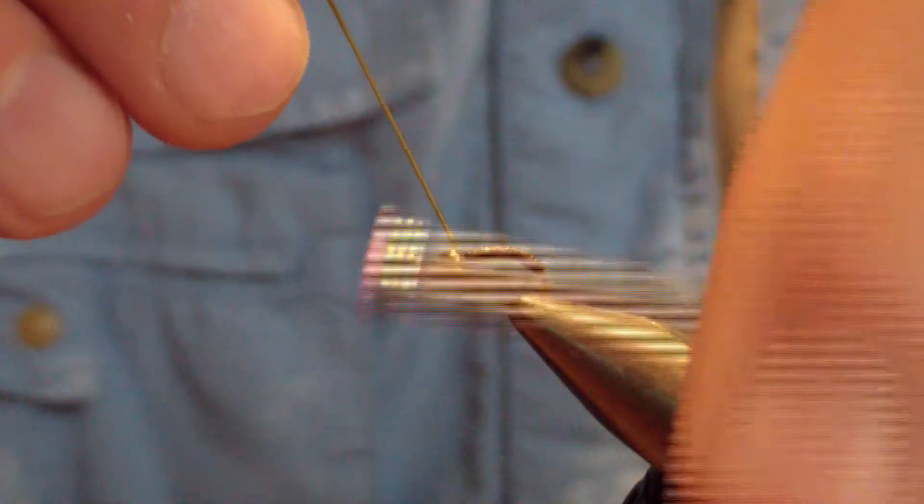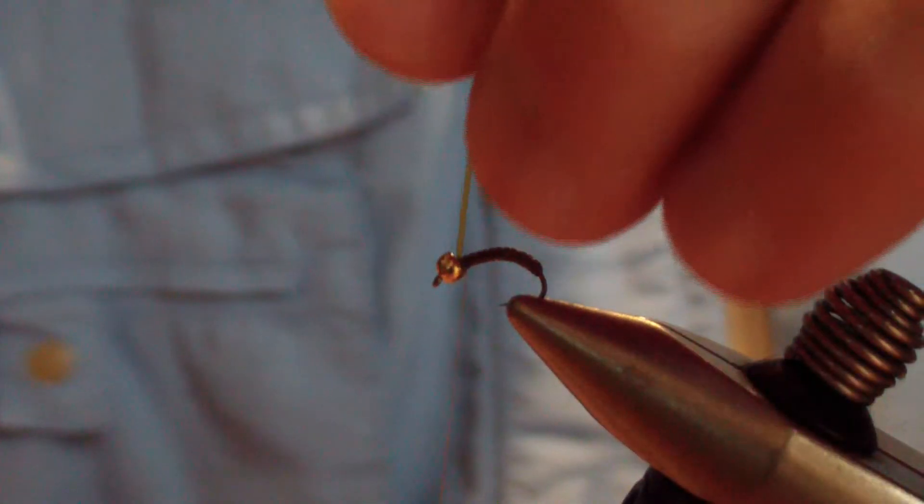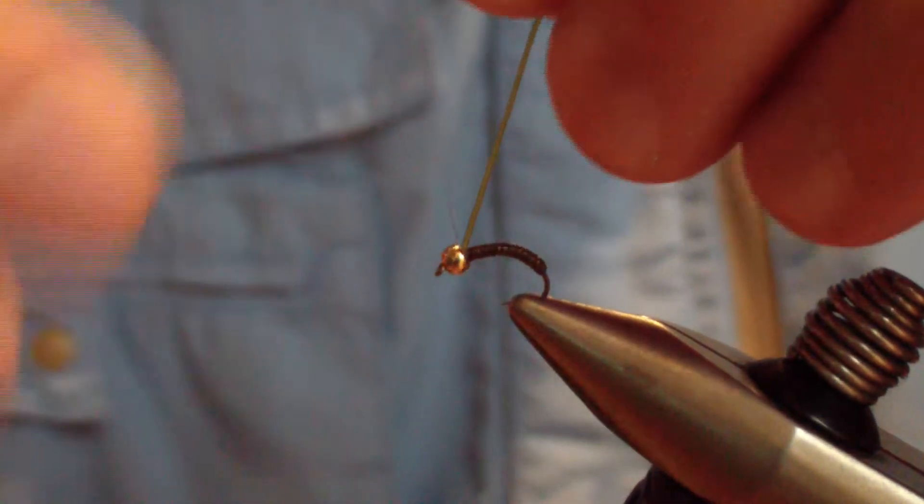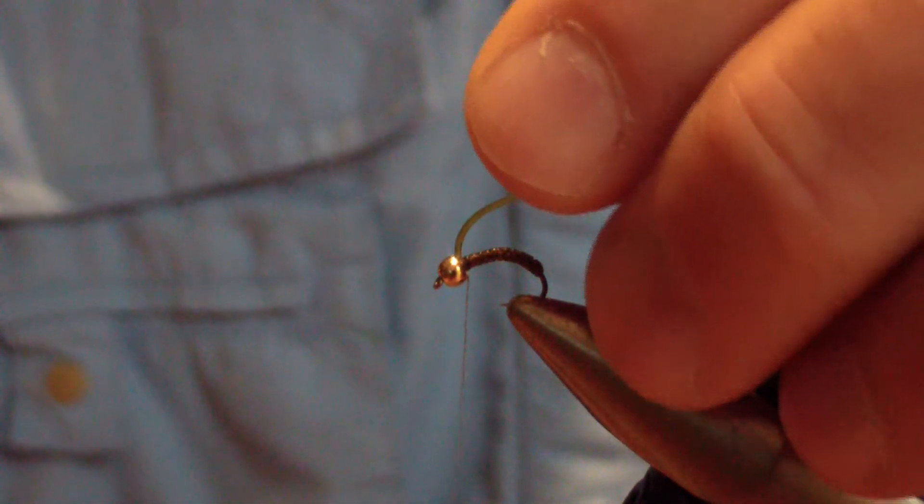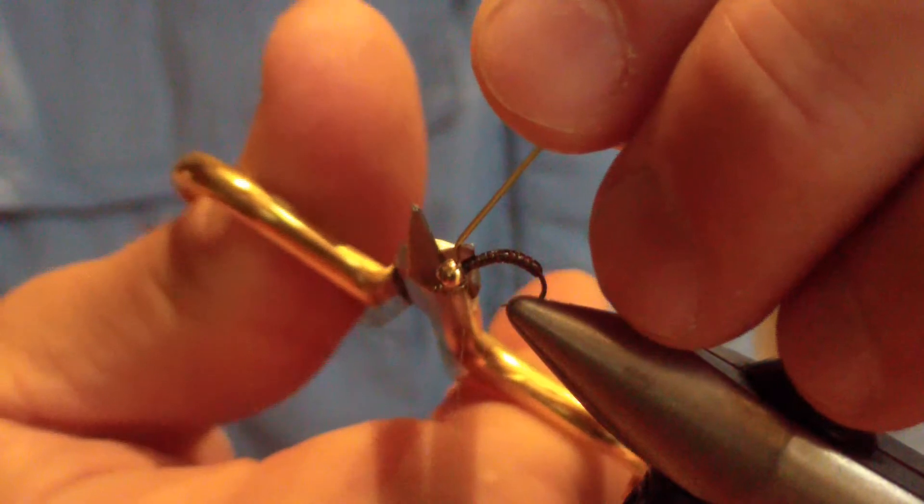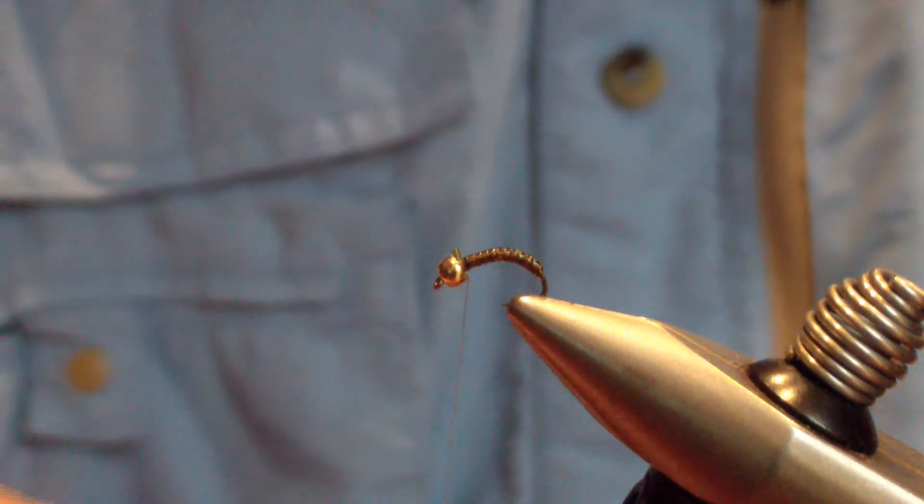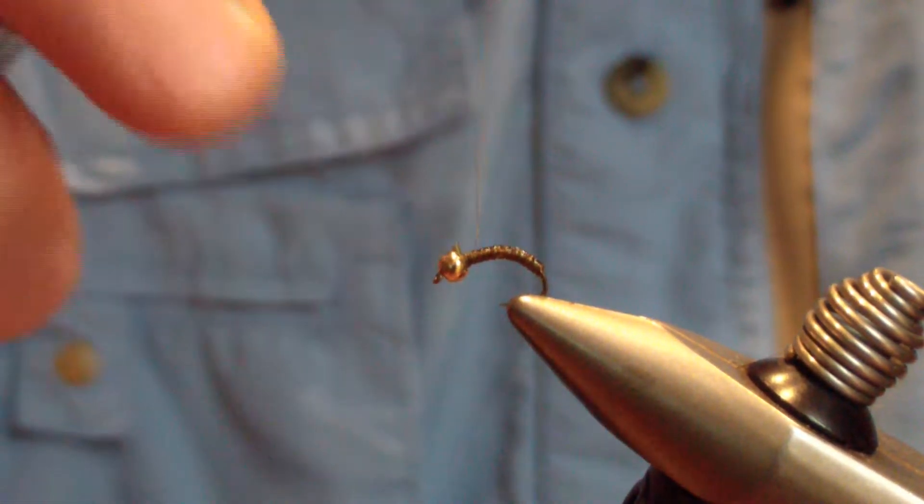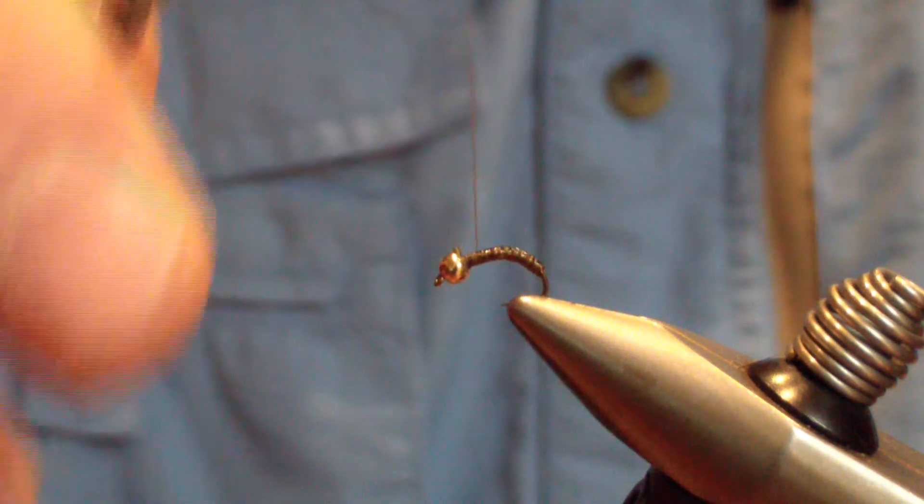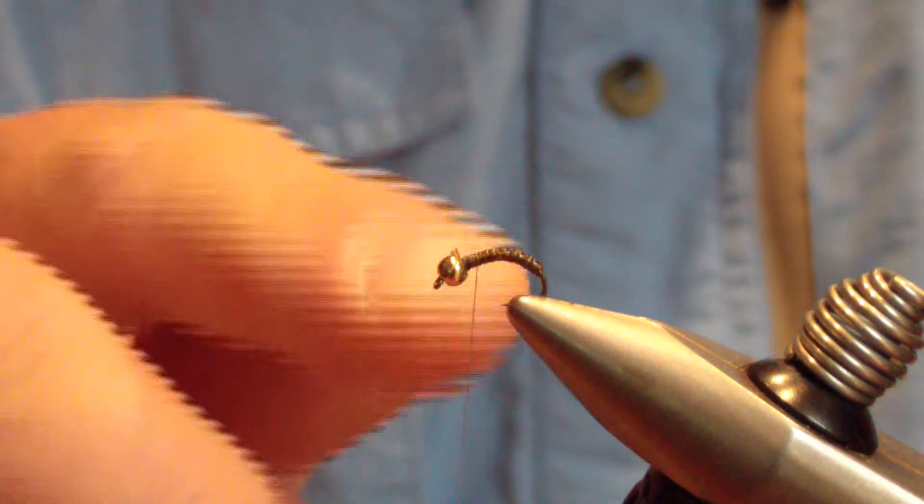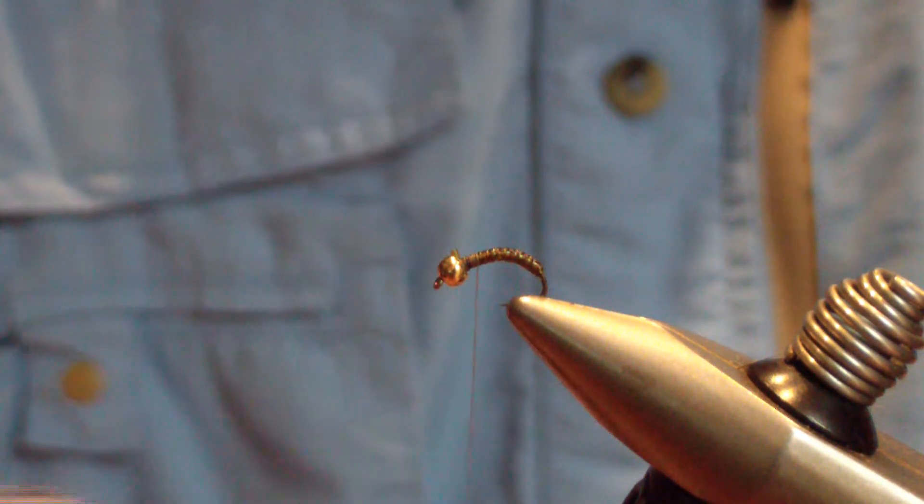Give it three wraps in front and three wraps behind before clipping it off. This stuff has a tendency to move on you—it's synthetic and you're stretching it. Bring that thread back about one bead length.